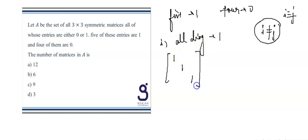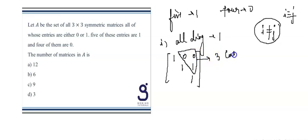If all diagonal elements are 1, we are left with 6 elements. Among those, we have two 0s and one 1. We need to arrange either the upper triangular or lower triangular part — the remaining entries follow by symmetry. So three cases are possible from this first case.